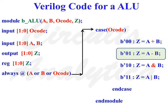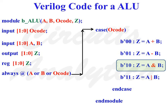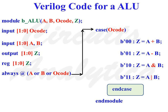When O-Code is equal to 2'b01, perform the operation Z = A - B. When O-Code is equal to 2'b10, perform the operation Z = A & B. When O-Code is equal to 2'b11, perform the operation Z = A | B. So we have covered all four cases of O-Code, and we can end the case block using the endcase statement. Finally, we can end the module using the endmodule line.